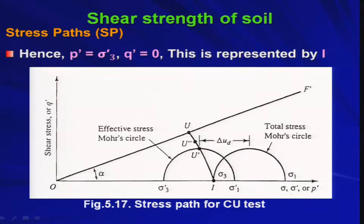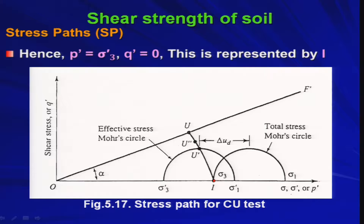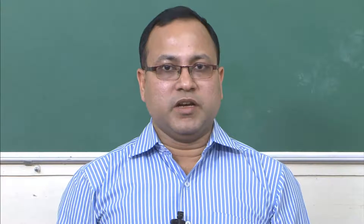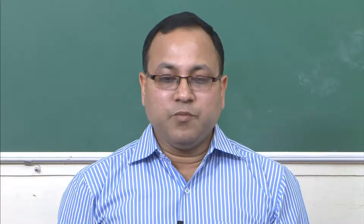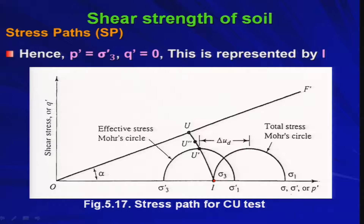Hence, P' equals sigma_3 and Q' equals 0 for this situation. This is represented by point I. So, for both the consolidated drained (CD) test and the consolidated undrained (CU) test, this point lies on the P' axis, because it is an isotropically consolidated test — all-round cell pressure sigma_3 is applied and the sample is consolidated.